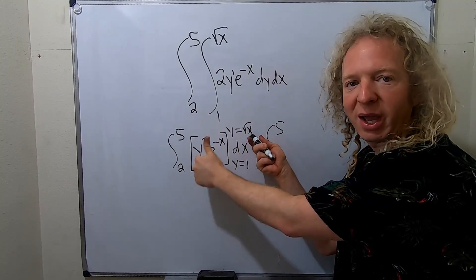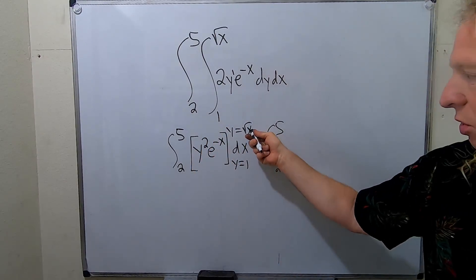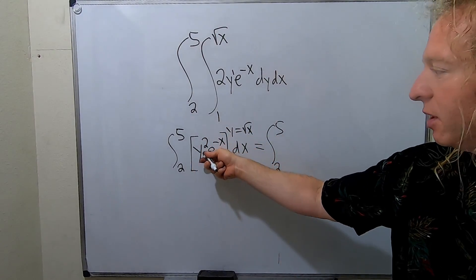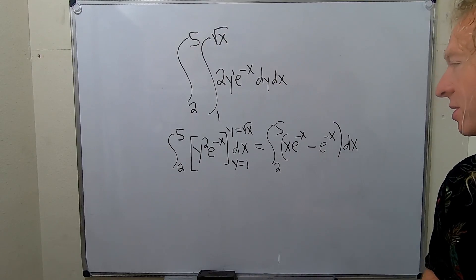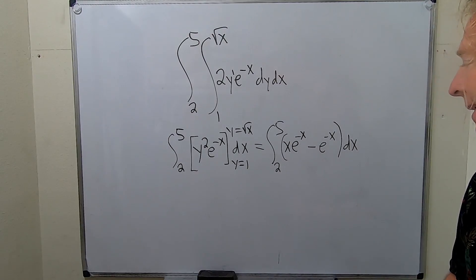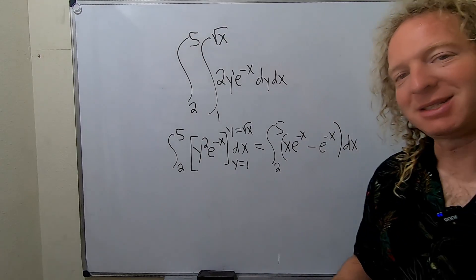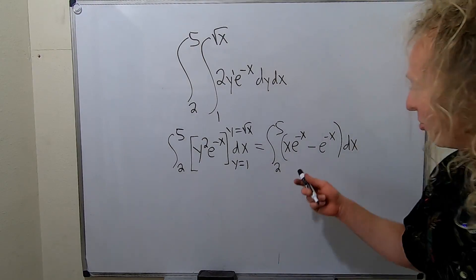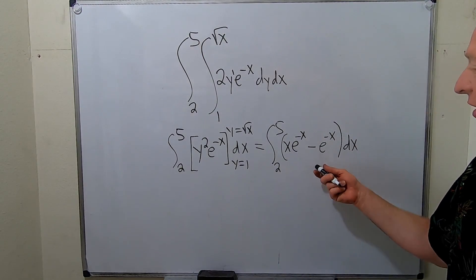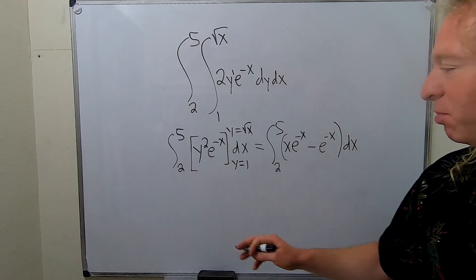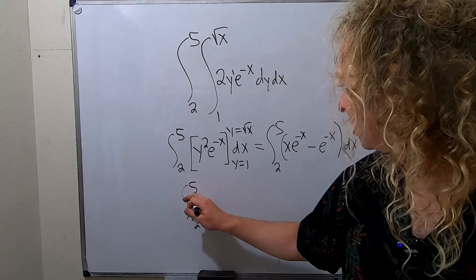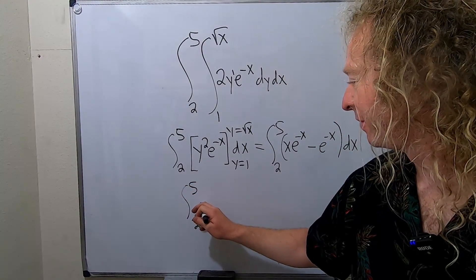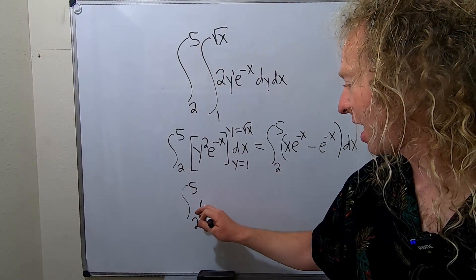We keep the outer limit of integration, so 2 to 5, and we're integrating with respect to y. That gives us 2y squared over 2 using the power rule, because 1 plus 1 is 2. The 2s cancel, so we're just left with y squared.